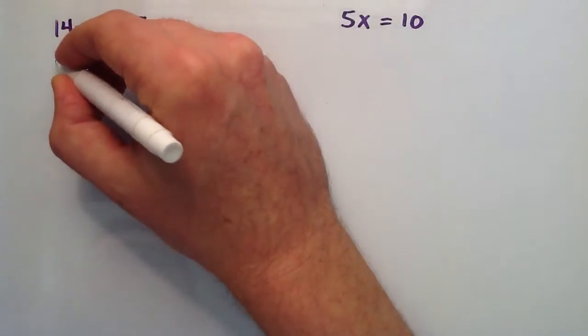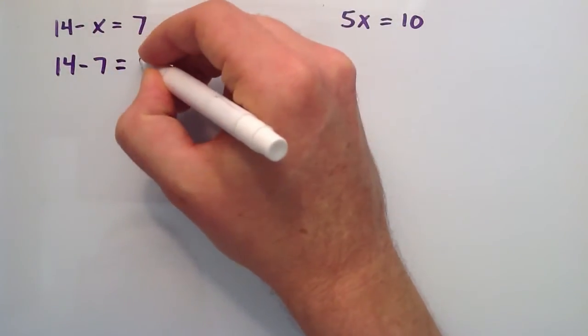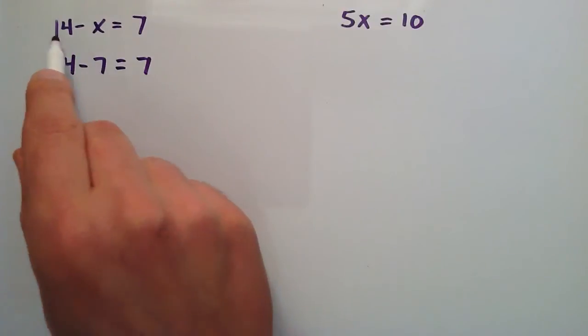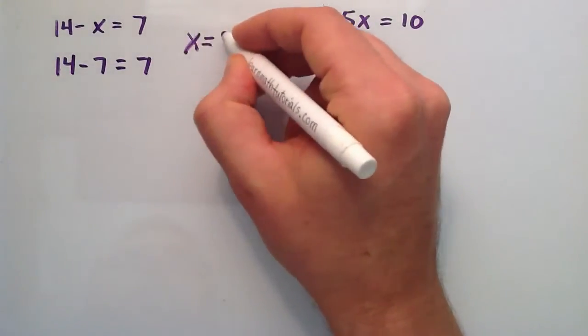And it turns out that 14 minus 7 is equal to 7. So, when x equals 7, this statement is true. Therefore, x equals 7 is our answer.